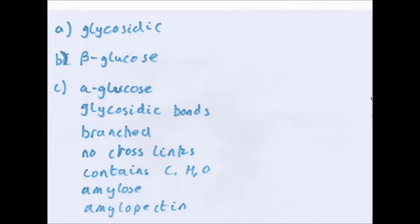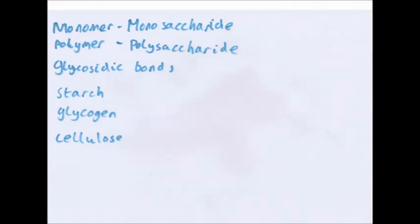Good. A. Name the bond that joins two monosaccharides. Glycosidic bond. Name the molecule formed from the hydrolysis of cellulose. That's when cellulose is broken down into its monomers. Beta glucose. Must put beta. And three features of the structure of glycogen. Any three out of these is made out of alpha glucose. Forms glycosidic bond. It is branched. No crosslinks. Contains carbon, hydrogen, oxygen. Contains amylose and amylopectin. Very simple. So, conclusion now.